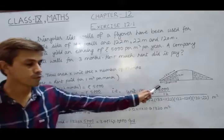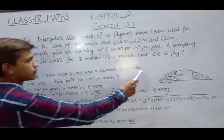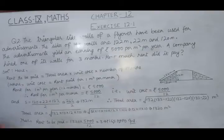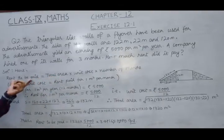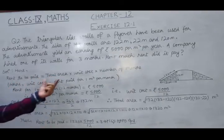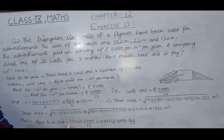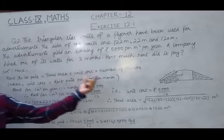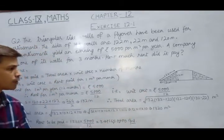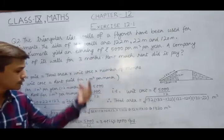Let's use this total area, 1320 square meter. Unit cost Rs. 5000 upon 12. And number of months, which is 3 actually, in this relation. So, that rent to be paid becomes 1320. This unit cost is Rs. 5000 upon 12. And number of months is 3.